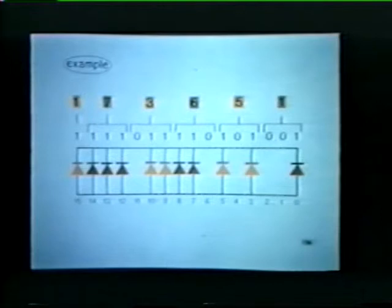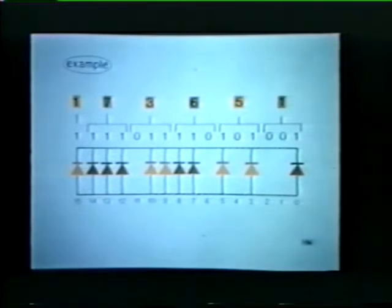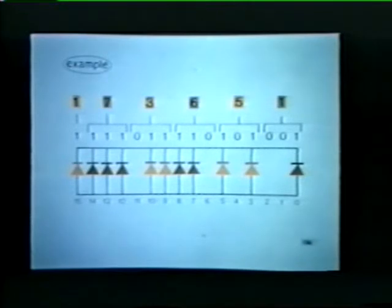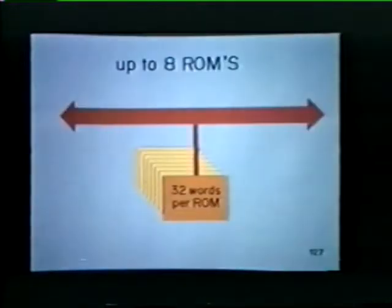In this example, we've removed specific diodes from our ROM in order to store the word 173651. Note that we've only removed diodes from those bit positions that correspond to binary zeros. In effect, the word 173651 has been hardwired into our diode ROM. Up to eight of these diode ROMs can be connected to the unibus, and each ROM holds 32 words of data.